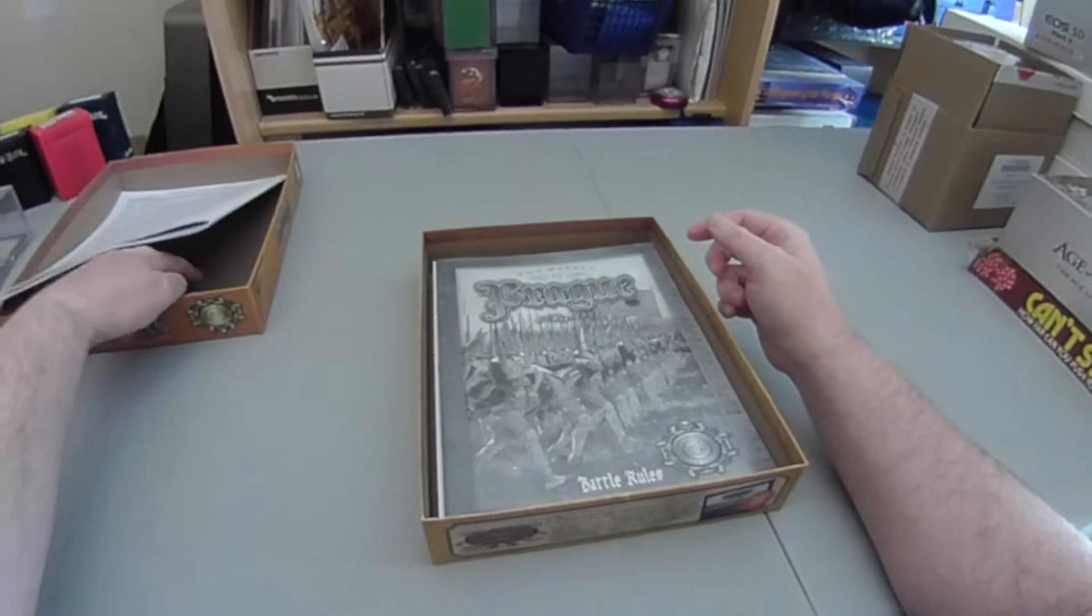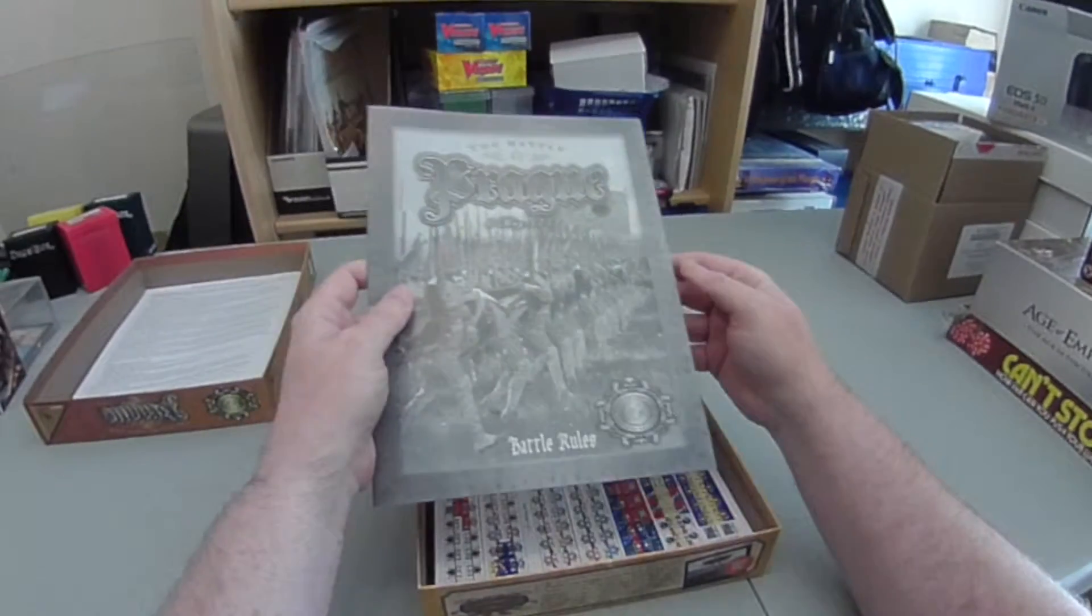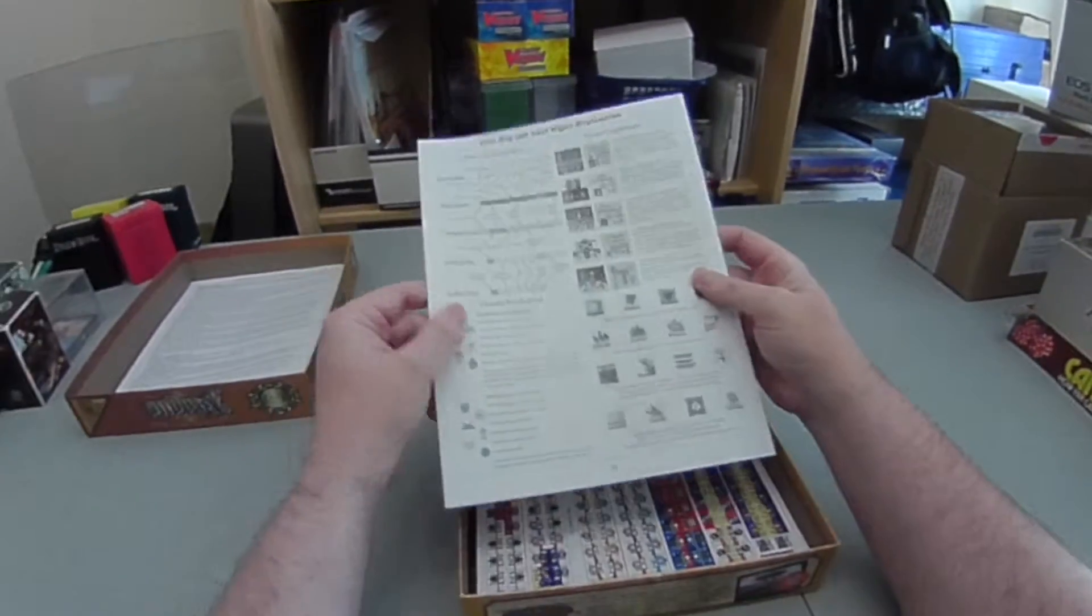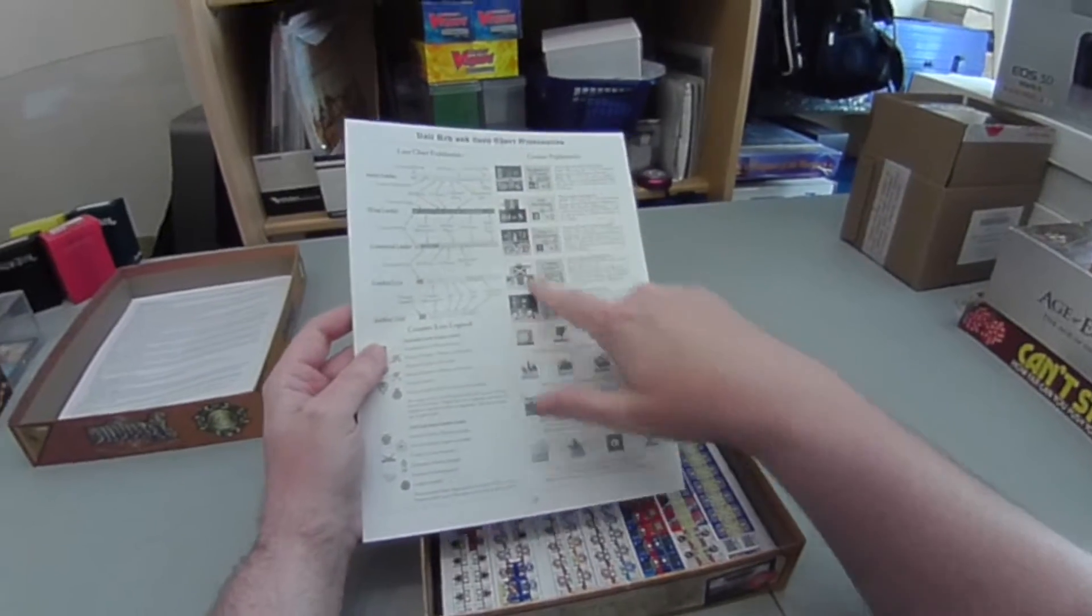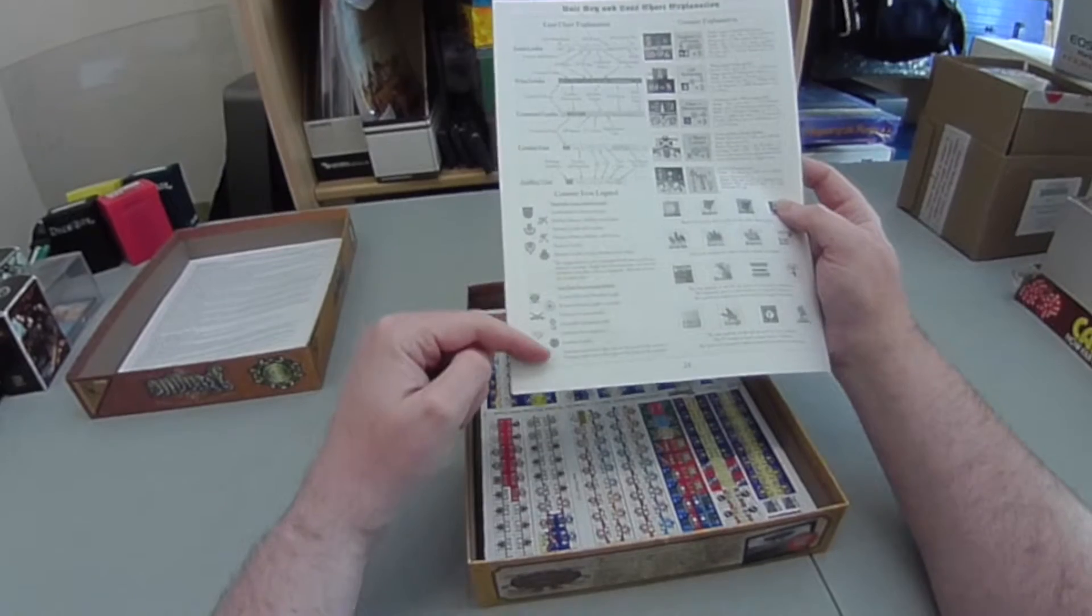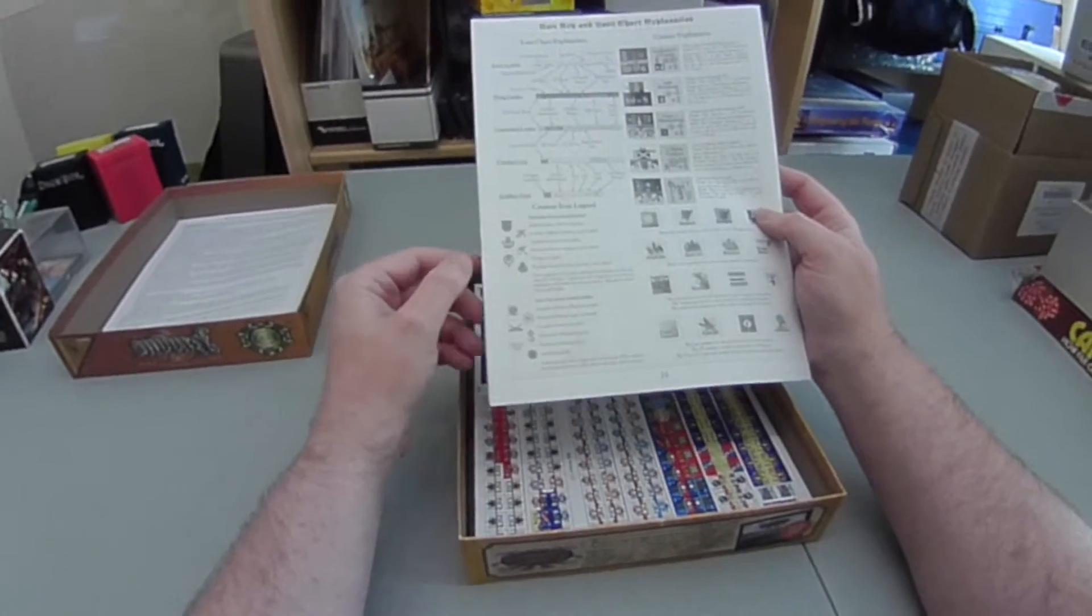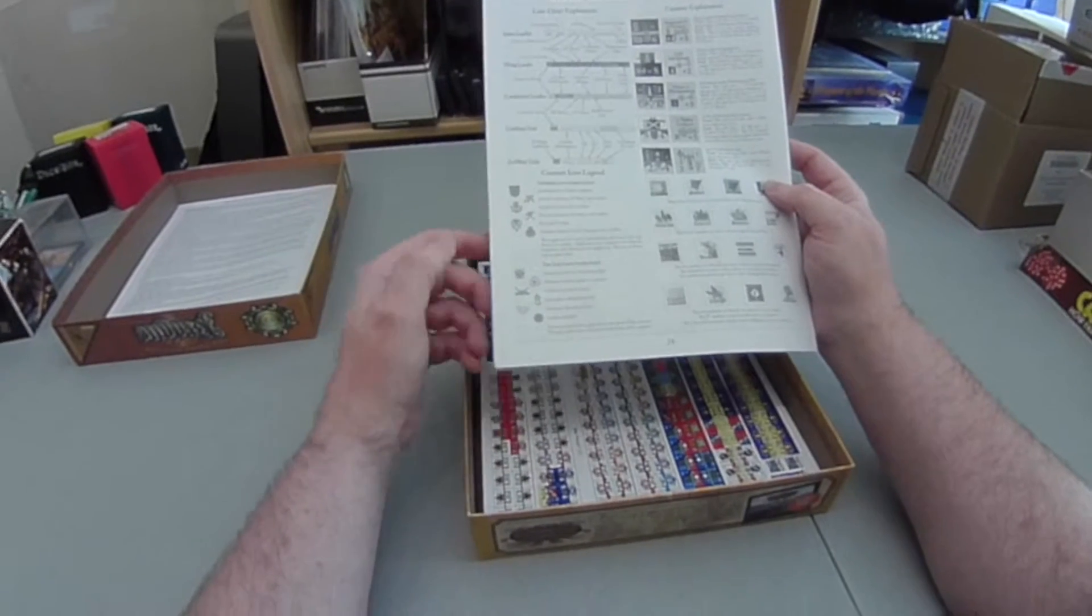Along with that, we've also got the battle rules for Prague itself. These are the rules for this particular battle. You can see some of the markers they used, some of the description of what the counters have got on them. The legend here for the different nationalities. So when you look at a counter, you can actually see, well, it's Austrian Infantry or Prussian Infantry or Grenadiers.